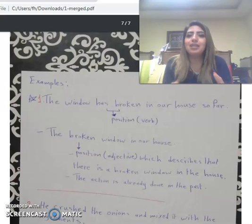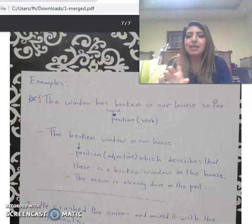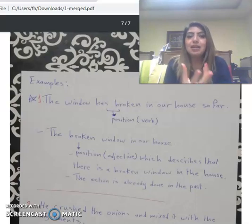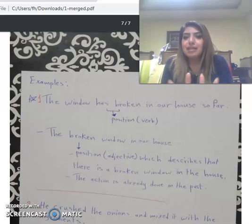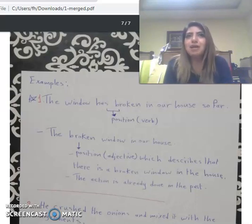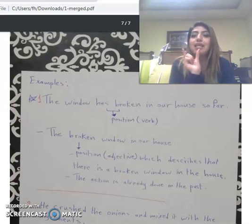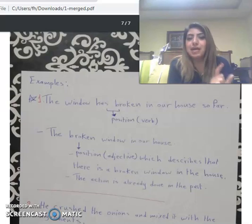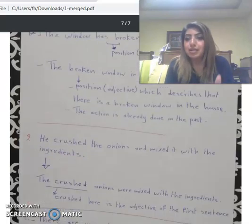استخدمنا 'the broken window' — 'broken' هون جاي صفة وصفت إنه عندي بالبيت شباك مكسور. بغض النظر مين كسر وشو صار، أنا هون اتكلمت بطريقة أكثر مباشرة لحتى الـ listener يفهم أكتر. The action is already done in the past. To talk about something that happened in the past as direct speech, we use the past participle because it's more intense.